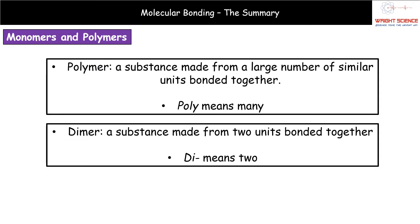The second word we need to know for this part is the word polymer. We can split that word down into the two parts. Poly means many, mer means part. So many parts. Our polymer is a substance that's made from a large number of similar units that have been bonded together.